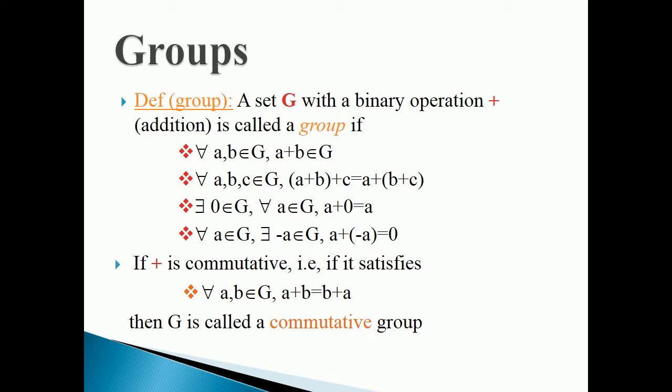If + is commutative, i.e., if it satisfies: for all a, b ∈ G, a + b = b + a, then G is called a commutative group.